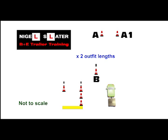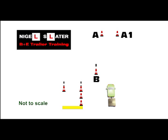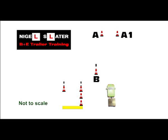A to B is twice the length of the vehicle and trailer. The overall length of the manoeuvre will be 5 times the length of the vehicle and trailer. The width of the bay will be 1.5 times the widest part of the unit, and the length of the bay will be based on the overall length of the vehicle and trailer as a unit.